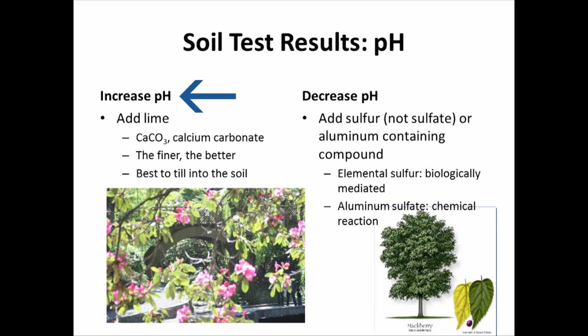Say we're trying to grow a nice healthy lawn and our pH is four — we're going to need to get that pH to five and a half or six. The soil test will tell us that our pH is four, and if we indicate we're trying to grow a lawn, it will also know we need to get it up to about six. It will tell us how much lime or calcium carbonate we need to add to reach that target. That's a very useful function of a soil test.